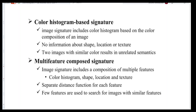Multi-feature composed signature means the image signature includes a composition of multiple features like color histogram, shape, location, and texture. A separate distance function exists for each feature. These features — histograms, shape, location, or texture — are used to search for images with similar features, allowing retrieval of relevant content.